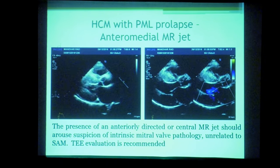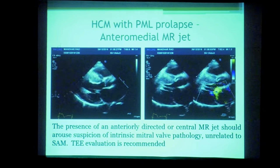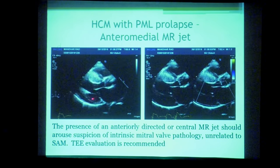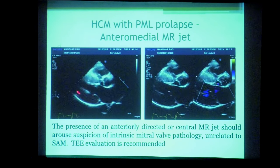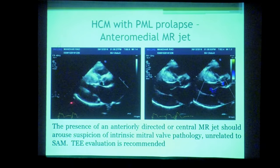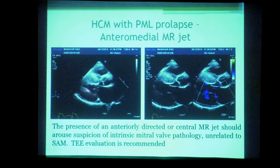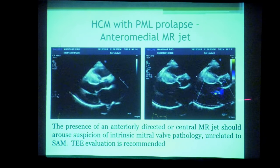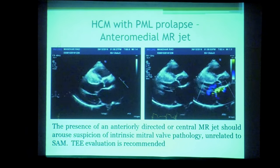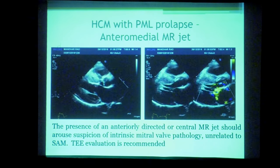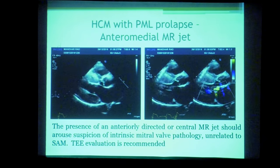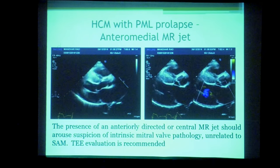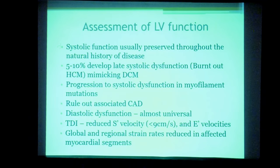An illustrative case appeared to be a regular HCM presentation, but on careful inspection there was prolapse of the posterior mitral leaflet into the LV. The direction of the MR jet was anteriorly directed — an anteromedially directed jet — rather than the typical posterior jet of SAM-related MR. A central or anteriorly directed MR jet should raise suspicion of an intrinsic mitral valve abnormality rather than SAM as the mechanism.